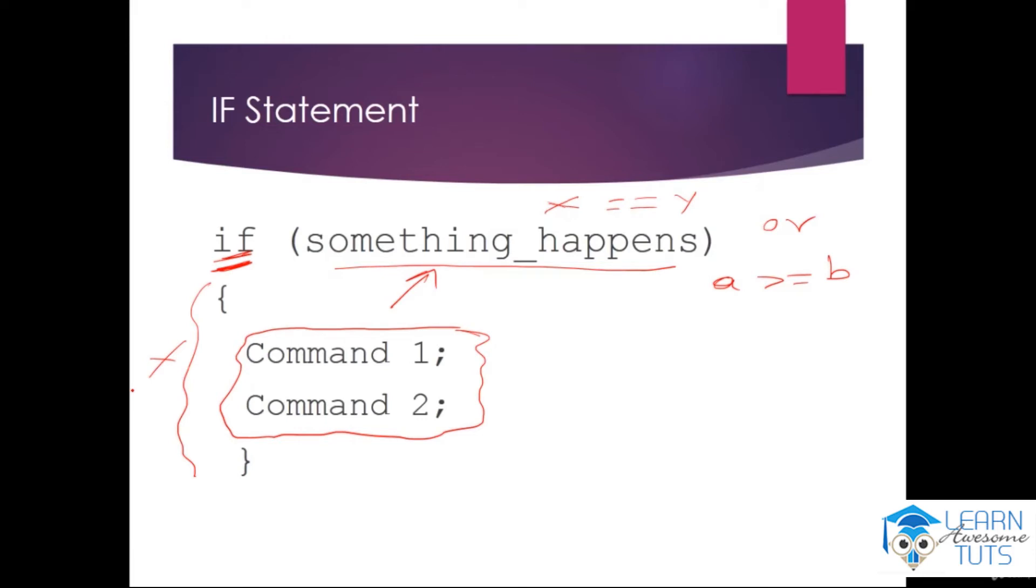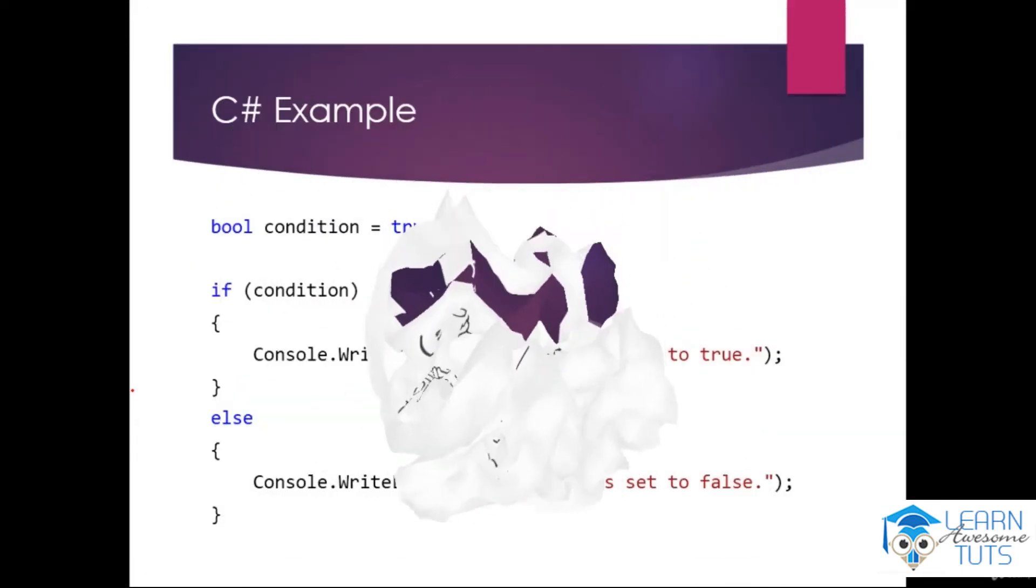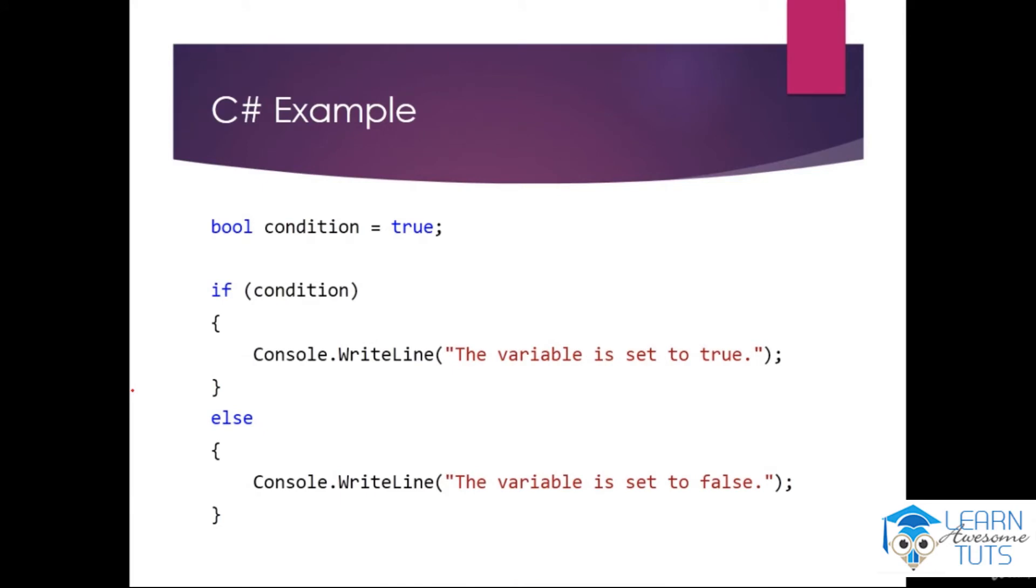So actually, we can see a simple example in C#. Here we have a variable named Condition. It can keep Boolean values, which means it can only have either true or false. Here it is true,